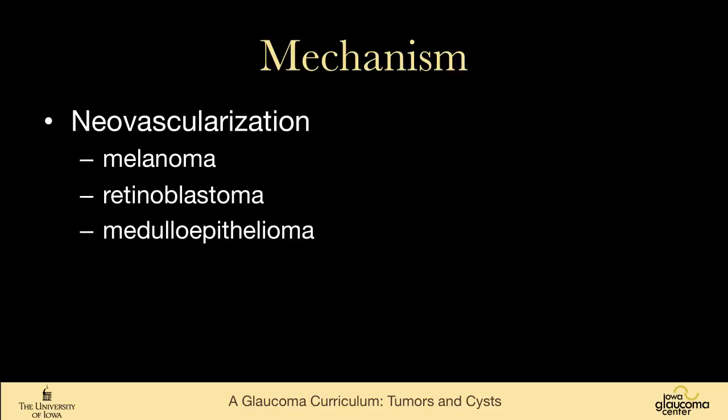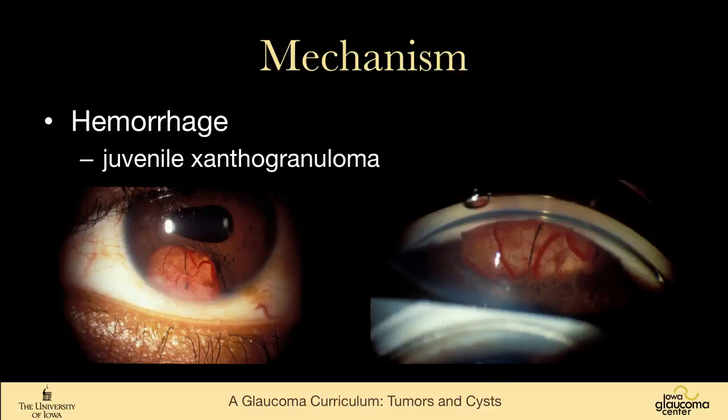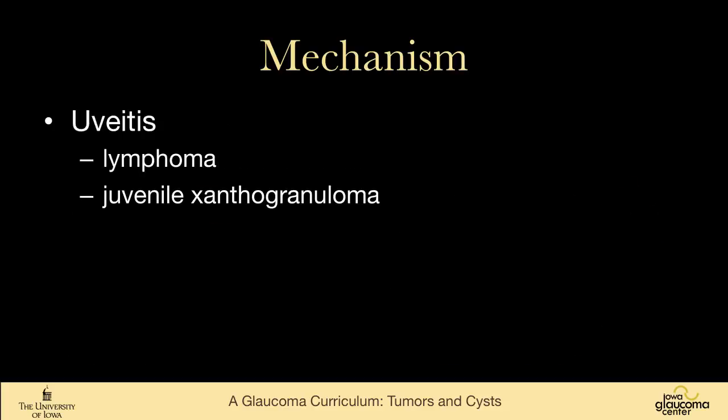These large tumors can cause neovascularization that looks just like neovascularization from other causes — particularly melanoma, retinoblastoma, and medulloepithelioma. One can also have hemorrhage from a variety of tumors, particularly xanthogranuloma, as in this young patient. And one can have uveitis from lymphoma or juvenile xanthogranuloma.